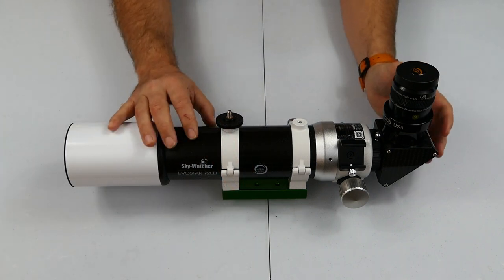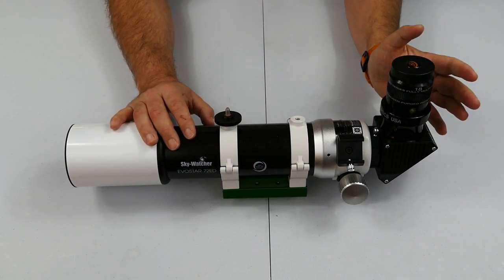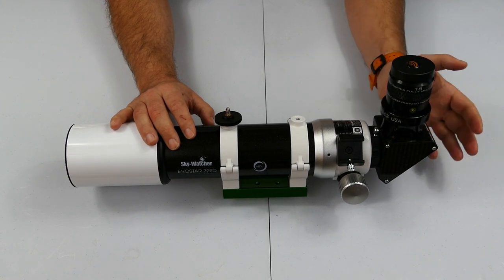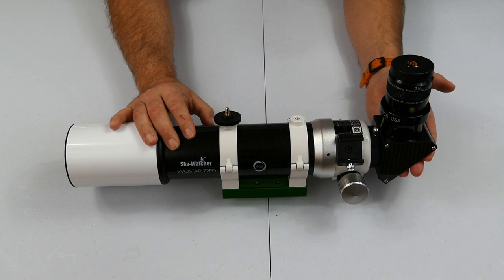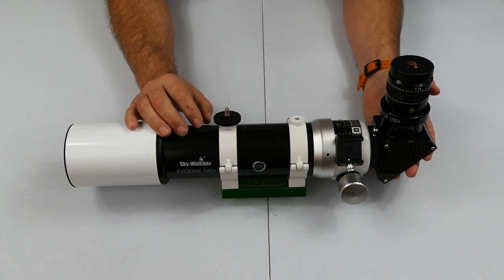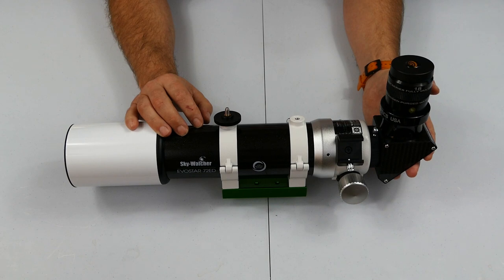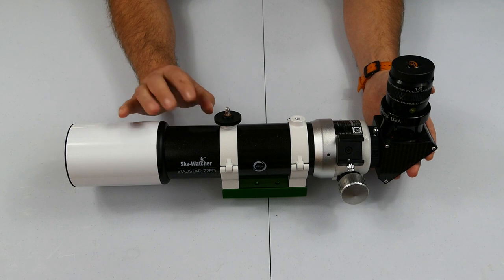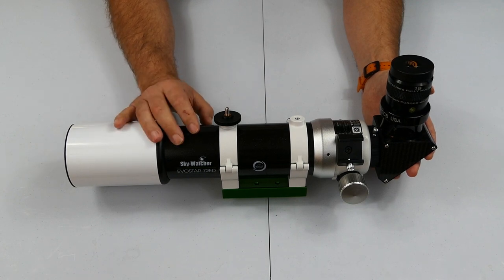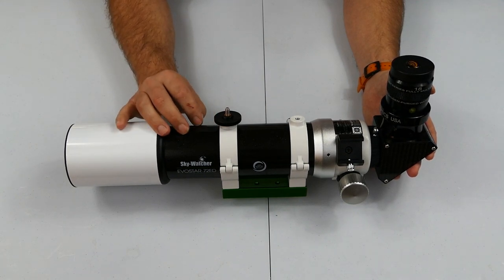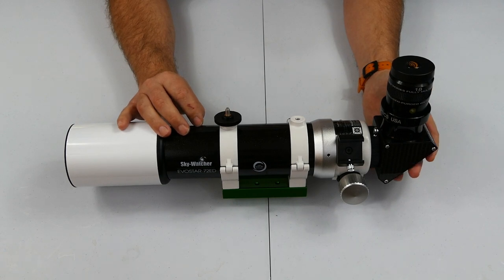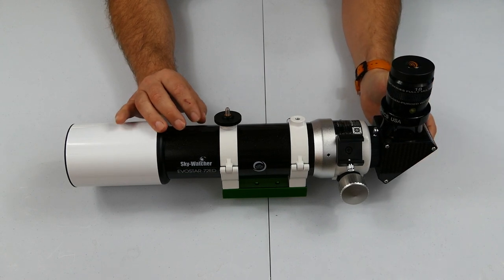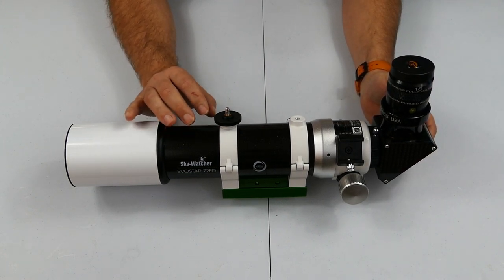As you can see from that image there, I did actually manage to get out and get some visual work done with my 18 millimeter 82 degree Explore Scientific eyepiece and my two inch William Optics star diagonal, and I have to say the results were absolutely brilliant. I was so surprised. I certainly didn't find myself screaming aperture aperture. The contrast was really good for a scope of this size, the stars were absolute pinpoints.